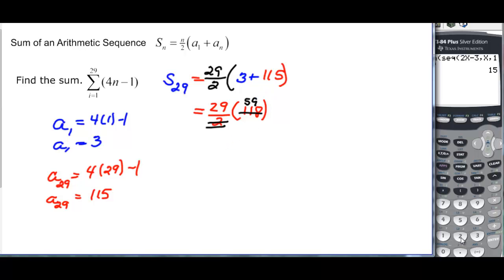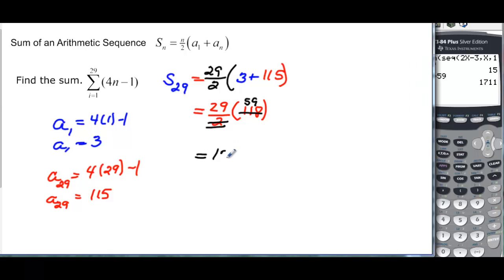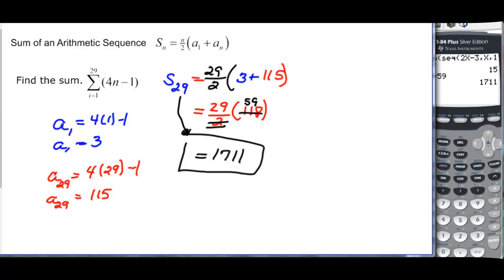And the 2 is going to cancel the 118 and it goes into it 5 times with 18 left over. So 59, and 29 times 59 is 1711. That's what the sum of the first 29 terms would be: 1711.